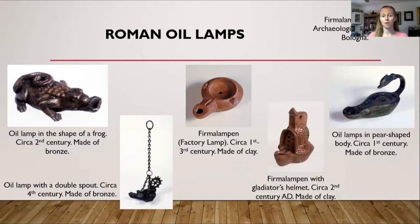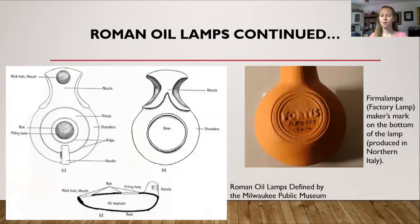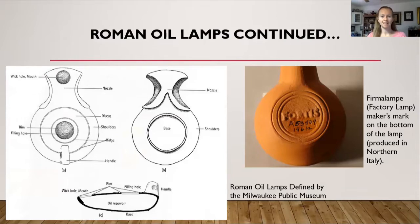If you are interested in Roman oil lamps, I recommend looking up the word Fermilampin at the Archaeological Museum of Bologna, and you will find many more examples. If you're curious how a Roman oil lamp worked, the picture on the left is a diagram provided by the Milwaukee Public Museum, showing the different parts of the oil lamp: the base, the handle, the reservoir, the rim, and the nozzle. On the right side is a picture of the bottom of a factory lamp, and many Roman oil lamps have maker's marks on the bottom. This one specifically was produced in northern Italy.